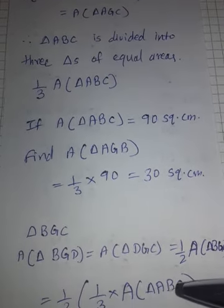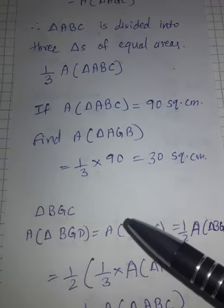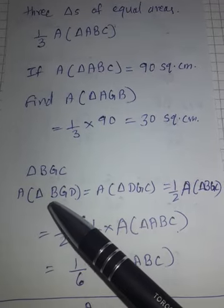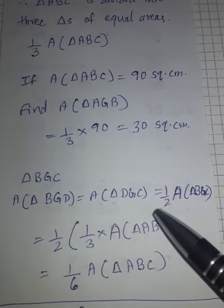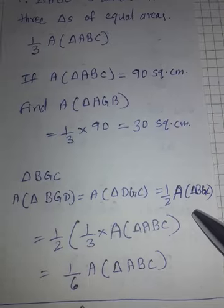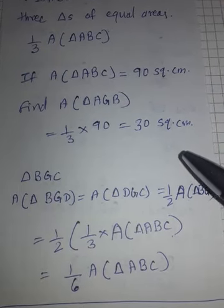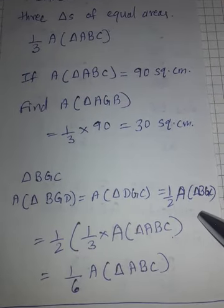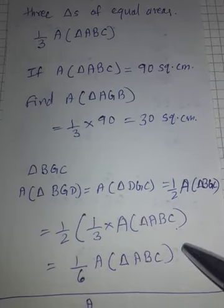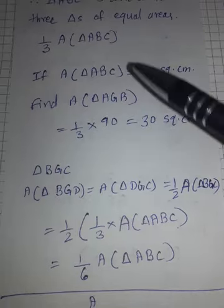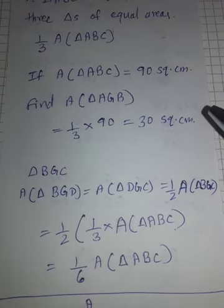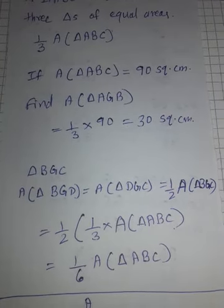Area of triangle AGB equals area of triangle BGC equals area of triangle AGC — triangle ABC is divided into three triangles of equal areas, each one third of ABC. And smaller triangles BGD, DGC are half of BGC, so one sixth of the big triangle.